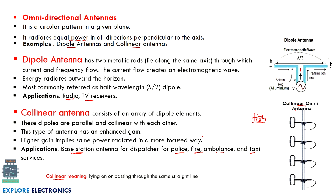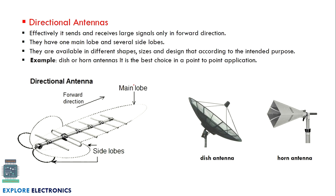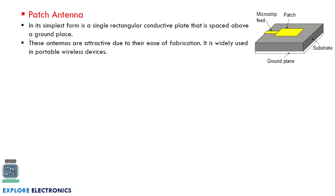Directional antennas send and receive signals only in one direction — the forward direction. They have one main lobe and several side lobes, as you can see in the diagram. These are available in different shapes, and examples include dish antennas and horn antennas. Dish antennas are used in TV broadcasting and reception of TV signals.